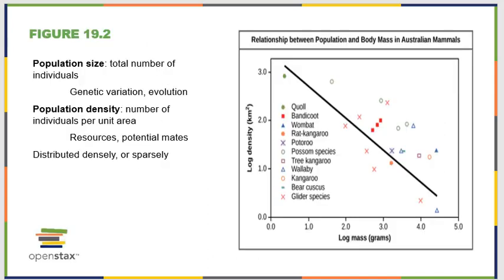This is a mapping between population and body size in Australian mammals. It's one of those examples of mathematical calculation that tells you a whole lot about a population, because as you can see, the more densely populated a given region is, the smaller those individuals of that species are likely to be. This harkens back to two characteristics we commonly use to describe a population: population size — the total number of individuals — and population density — the total number of individuals per unit area.